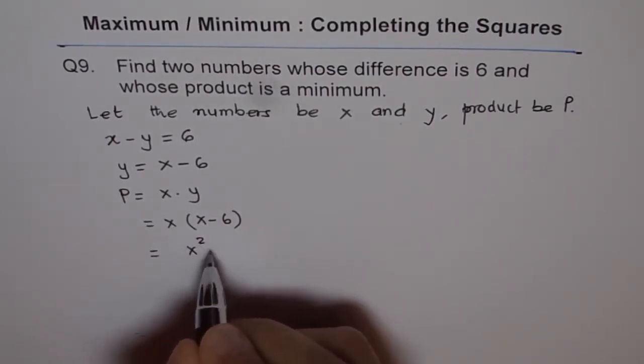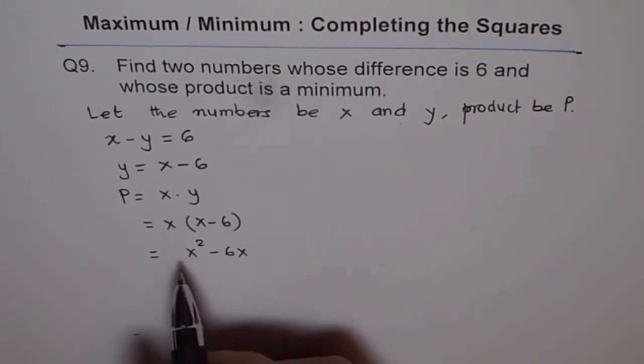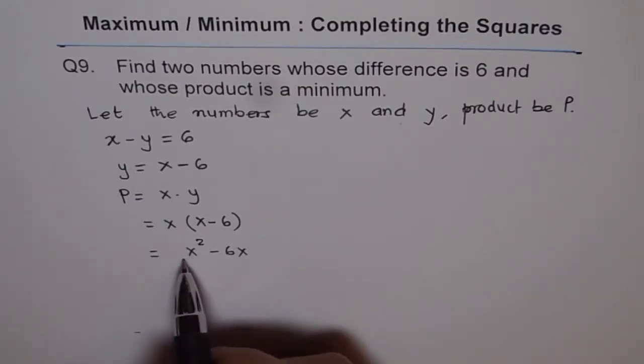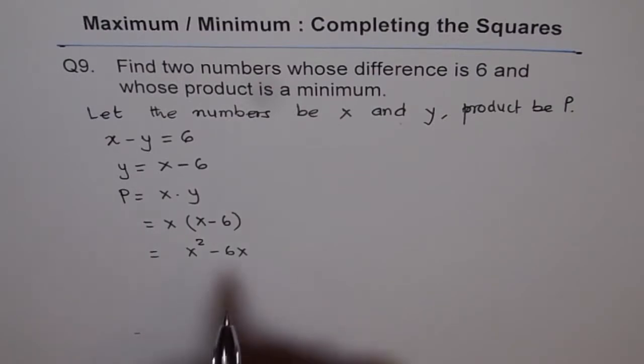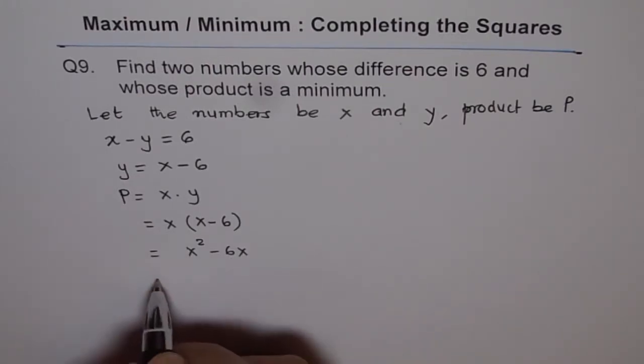P equals x squared minus 6x. In completing the squares, we normally factor out the leading coefficient, the coefficient of x squared. Here it is already one, so no need to do that step. The second step is to do half of this number and add and subtract its square.